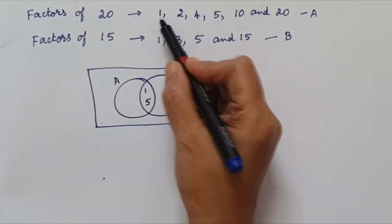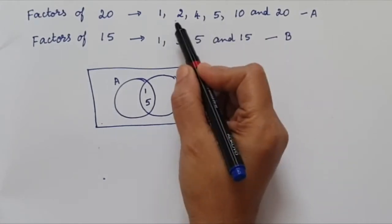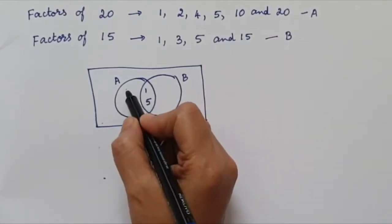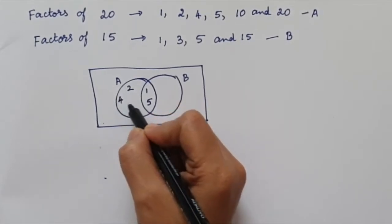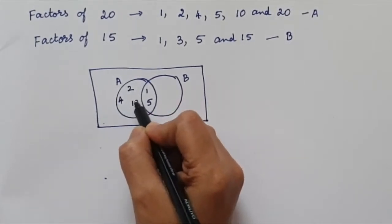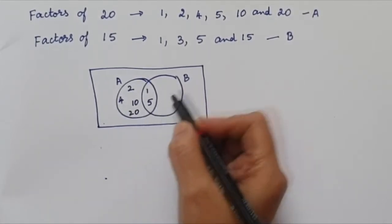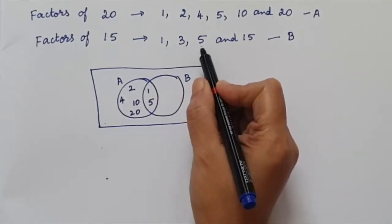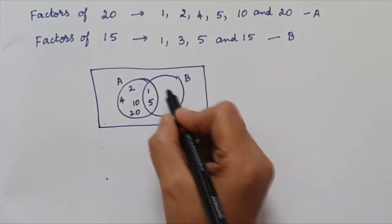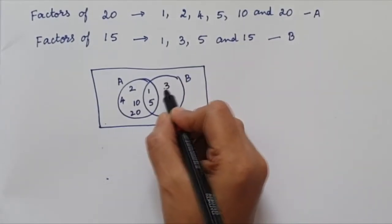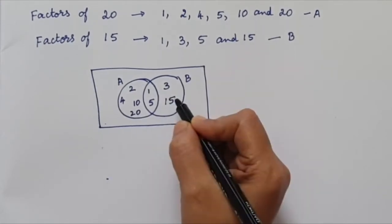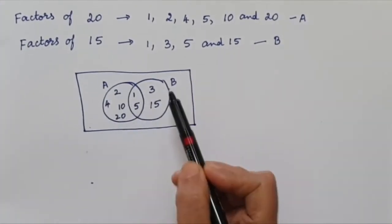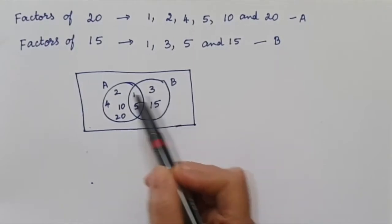We have already written 1 and 5 in the common region. We are left with 2, 4, 10 and 20, so we write those in circle A only. In the same way for set B, we have already written 1 and 5. The left out numbers are 3 and 15, so we write 3 and 15 in circle B only.